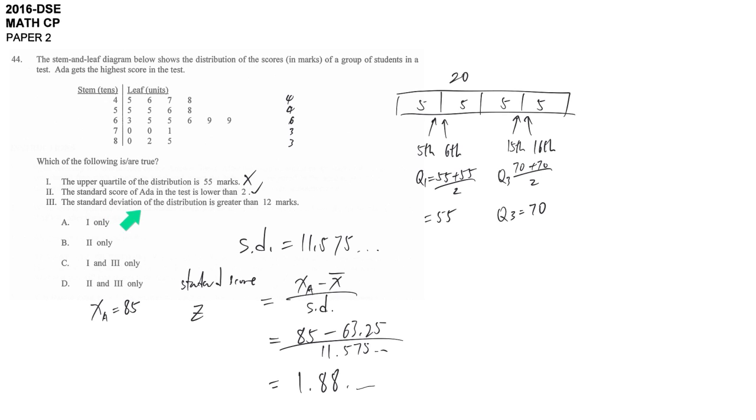The last statement says the standard deviation is greater than this. But we get the answer is 11 point something only. So this is wrong. The correct answer is statement 2 only.